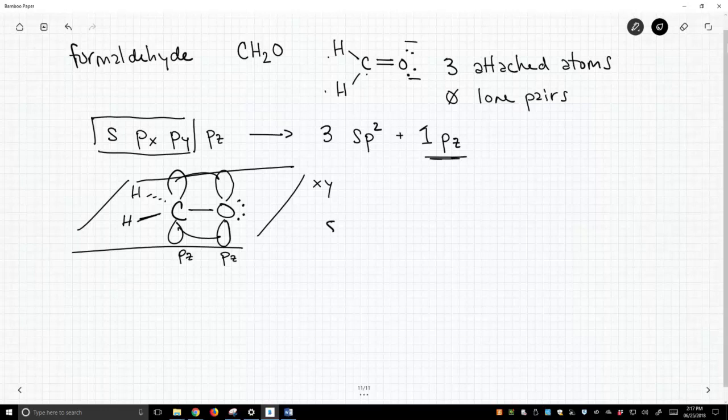So this is an sp2 hybridized carbon. Its bond angle should be about 120 degrees. And you know, that would be our bond angle of 120. We could also measure between that oxygen and that hydrogen and the two hydrogens.